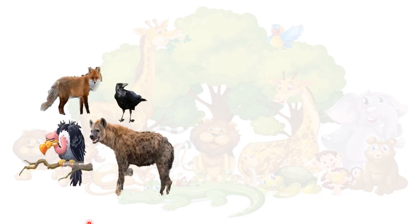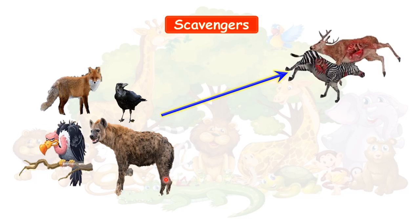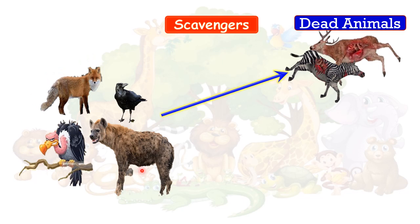Now children, here you can see another group of animals — fox, crow, hyena and vulture. These are the animals or birds that eat dead animals, that is why they are known as scavengers. Children, they never hunt. They don't hunt and kill animals — they eat dead animals only. If they get dead animals they will eat, but if not, they will not eat because they never hunt. They survive on dead animals only.